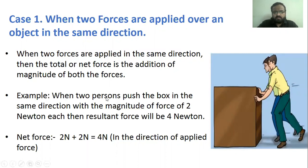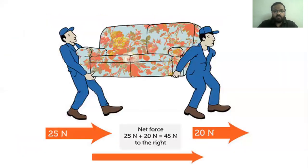For example, when two persons push a box in the same direction with a magnitude of two Newton each, the resultant force will be four Newton. As you can see in this picture, a force of 25 Newton and a force of 20 Newton are applied in the same direction, so the net force will be 45 Newton.